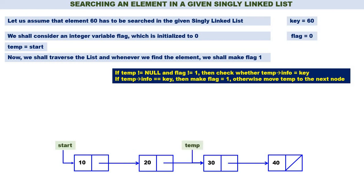Again: temp is not equal to null, containing address of node 30. Flag is not equal to 1. Temp of info is 30, key is 60 — 30 is not equal to 60. Therefore temp is equal to temp of next. Again: temp is not equal to null, containing address of node 40. Flag is not equal to 1. Temp of info is 40, key is 60 — 40 is not equal to 60. Therefore temp is equal to temp of next. But what is temp of next now? Null. So when we do temp equal to temp of next, temp becomes equal to null.